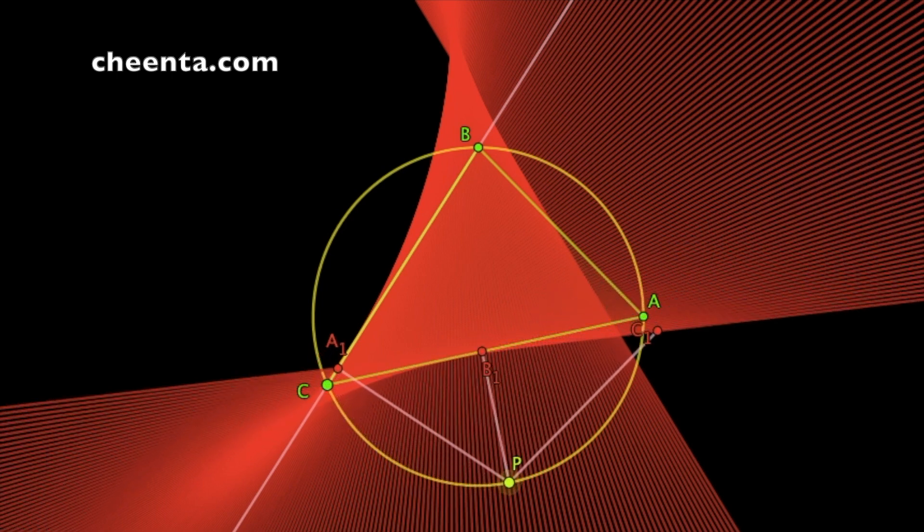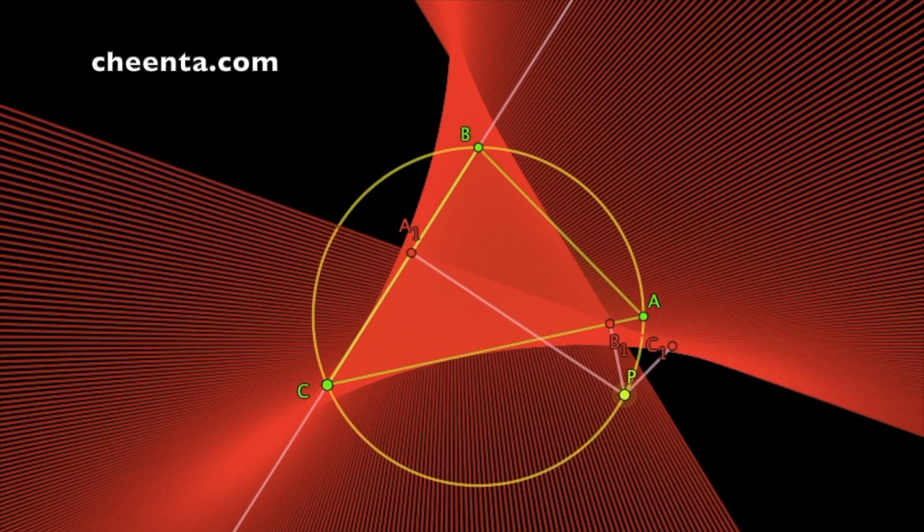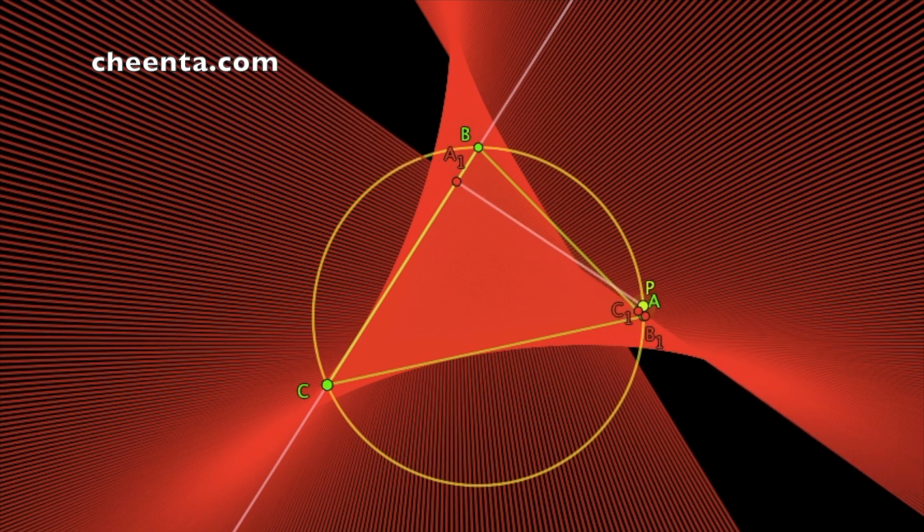This is precisely the Steiner hypercycloid. This was first discovered by Steiner in the middle of 19th century.